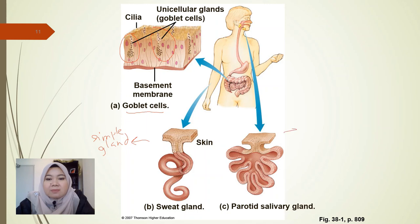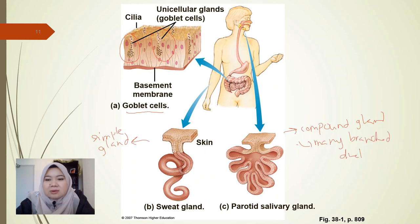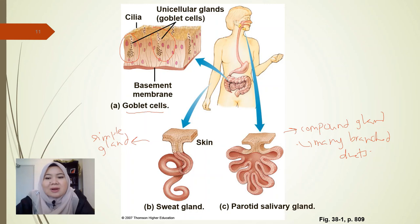The second type of exocrine gland is the compound gland. It is also an exocrine gland, but it has many branched ducts. An example of a compound gland is the parotid salivary gland. We don't have an example of endocrine gland in this diagram, but you can add your own.